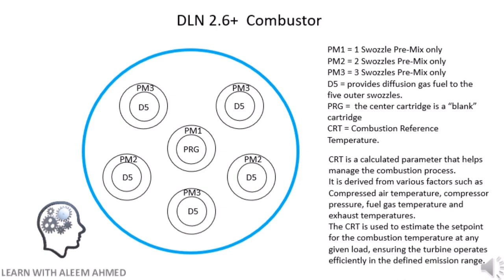In this video I will be giving reference of CRT, which is Combustion Reference Temperature. It is a calculated parameter that helps manage the combustion process. It is derived from various factors such as compressed air temperature, compressor pressure, fuel gas temperature, and exhaust temperatures. The CRT is used to estimate the set point for the combustion temperature at any given load, ensuring the turbine operates efficiently in the defined emission range.